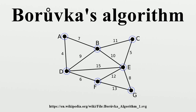Designating each vertex or set of connected vertices as a component, pseudocode for Borůvka's algorithm takes as input a connected graph G whose edges have distinct weights. Initialize T to be a set of one-vertex trees, one for each vertex of the graph. While T has more than one component: